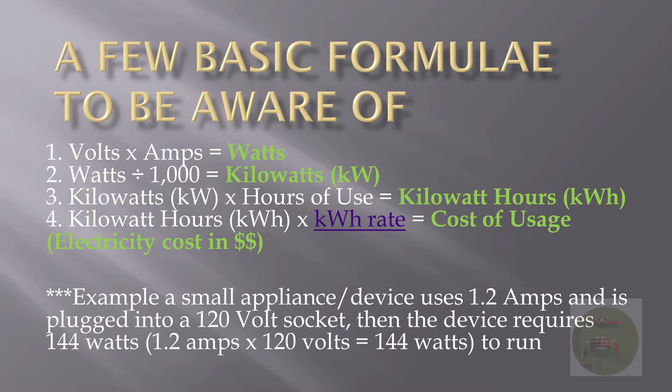In my example here I put 1.2 amps. So if you're given that information — the voltage and the amps — then you can convert that to watts. You can calculate watts, and watts equals volts times amps.